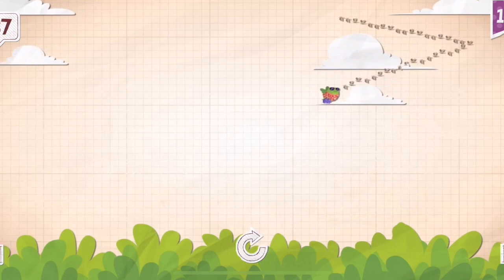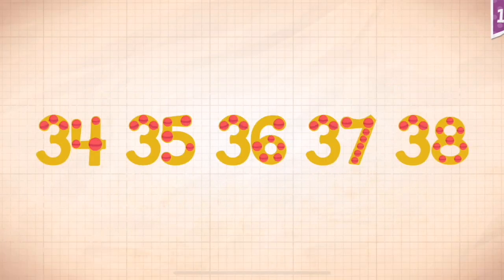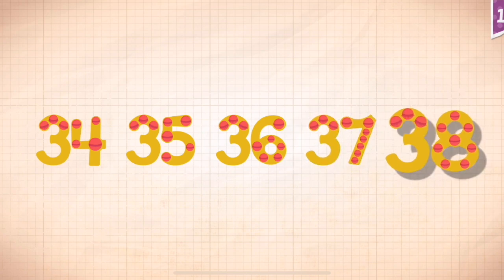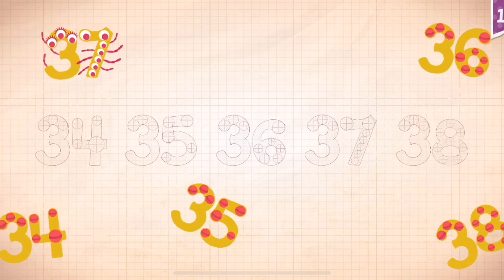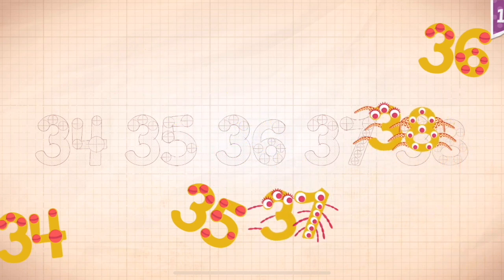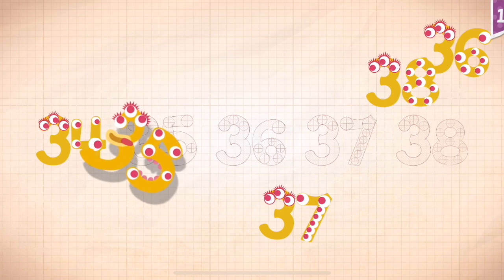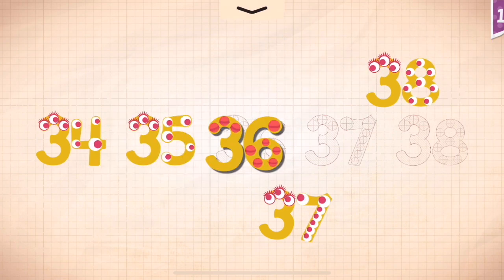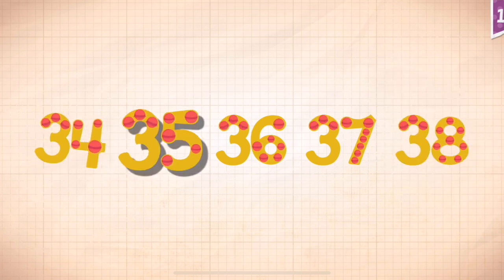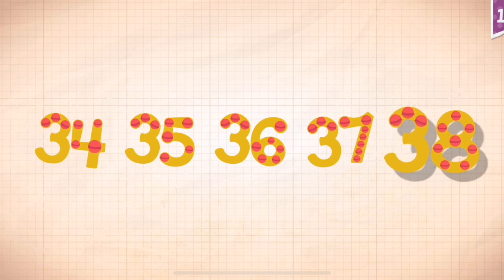Sam joined the 37 geese that were heading south for the winter. Count by ones starting at 34. 34, 35, 36, 37, 38. 34, 35, 36, 37, 38. 34, 35, 36, 37, 38.